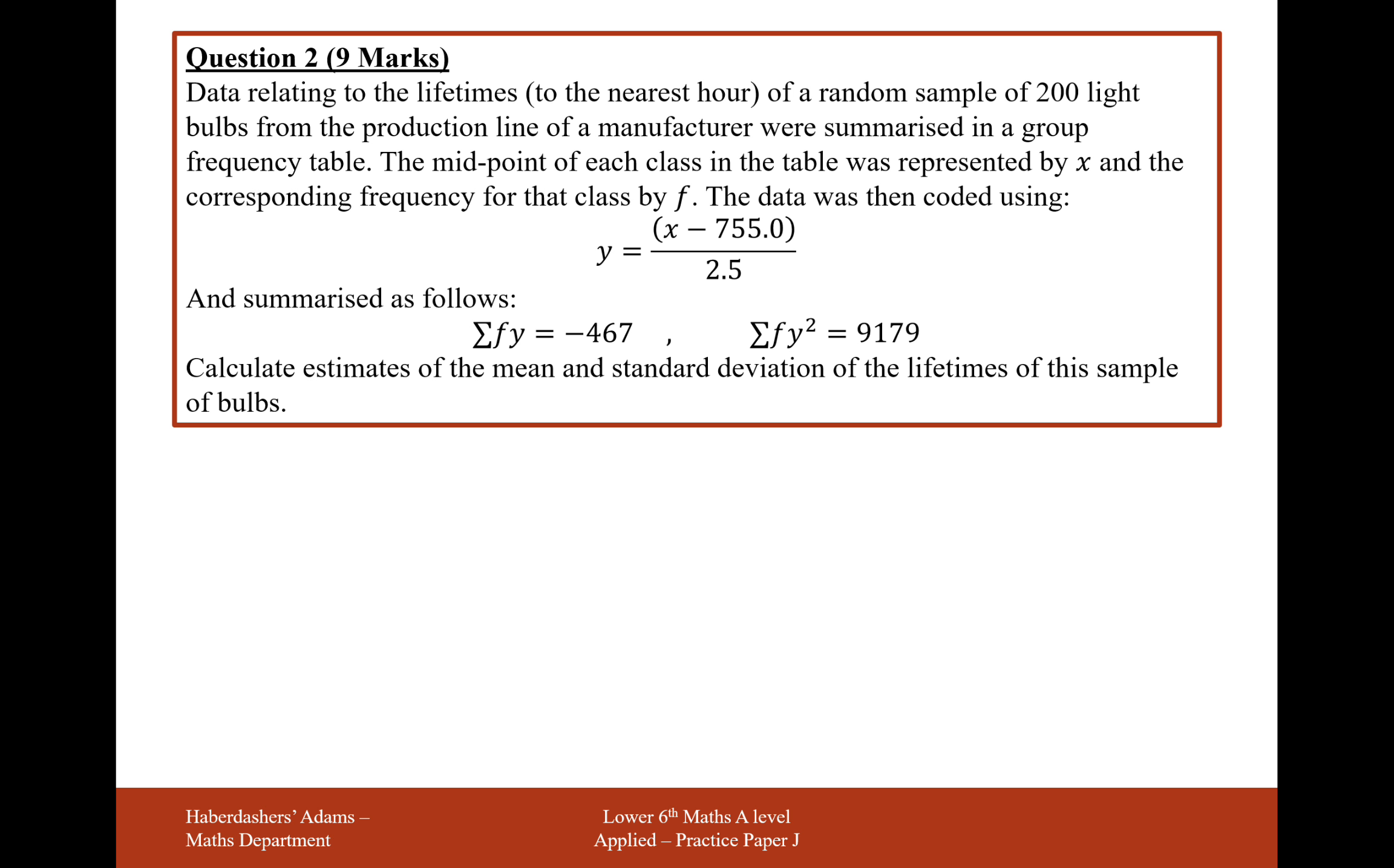The data is summarized as follows: the sum of FY = -467 and the sum of FY² = 9179. Calculate estimates for the mean and the standard deviation of the lifetimes of these bulbs.